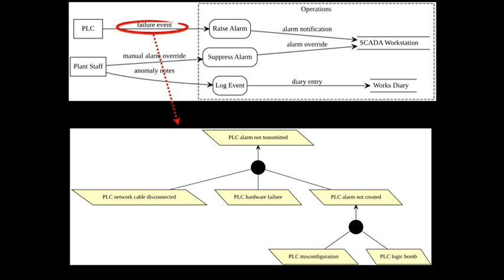Starting from a failure event data flow between the PLC entity and the 'raise alarm' use case, we create an attack tree to model what could stop that alarm from firing. The root obstacle is 'PLC alarm not transmitted' — this could happen if the PLC cable is disconnected, there's a hardware failure, or the alarm wasn't created due to PLC misconfiguration or a logic bomb. The attack tree is drawn on a whiteboard, rendered in Graphviz, then imported into KAIROS as an obstacle model.